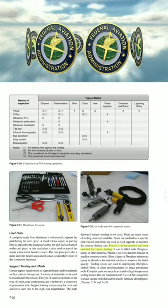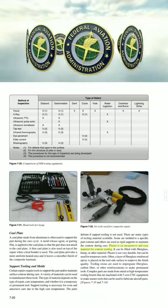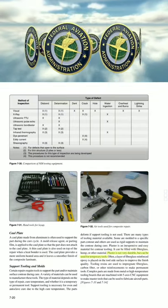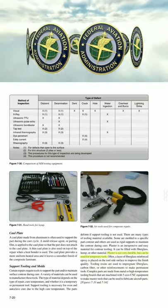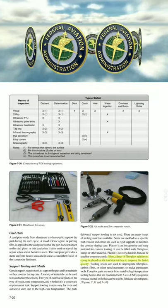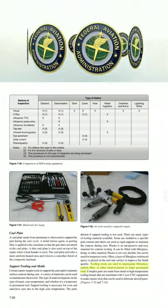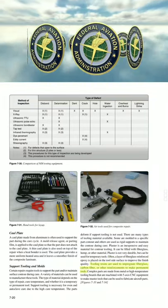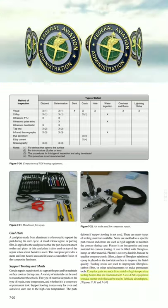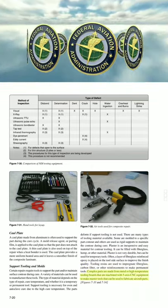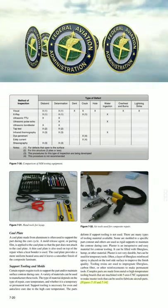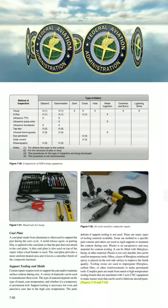There are many types of tooling materials available. Plaster is an inexpensive and easy material for contour tooling, can be filled with fiberglass, hemp, or other material, but is not very durable and can be used for temporary tools. Tooling resins are used to impregnate fiberglass, carbon fiber, or other reinforcements to make permanent tools. Complex parts are made from metal or high-temperature tooling boards machined with 5-axis CNC equipment to make master tools that can be used to fabricate aircraft parts.